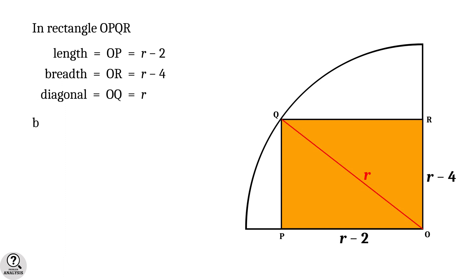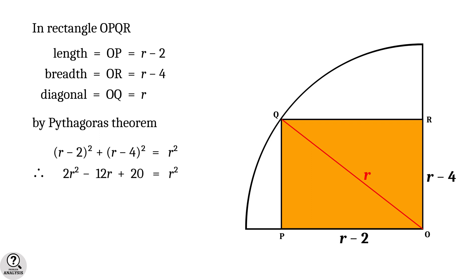By applying the Pythagoras theorem, we get: (R minus 2) squared plus (R minus 4) squared equals R squared. This simplifies to 2R squared minus 12R plus 20 equals R squared, that is, R squared minus 12R plus 20 equals 0 — a quadratic equation in R.